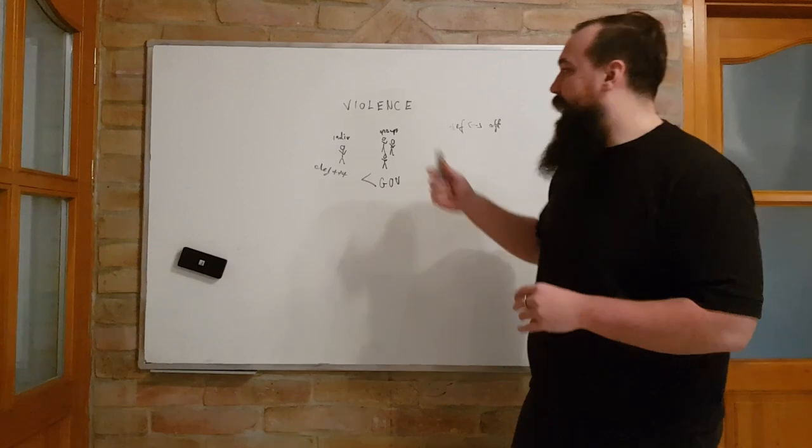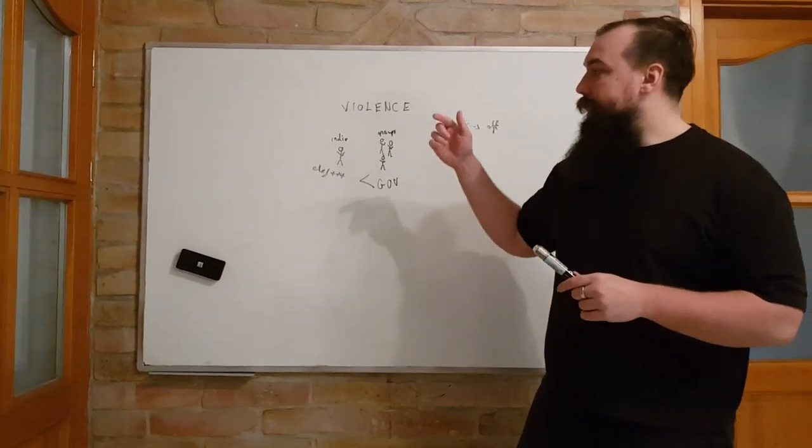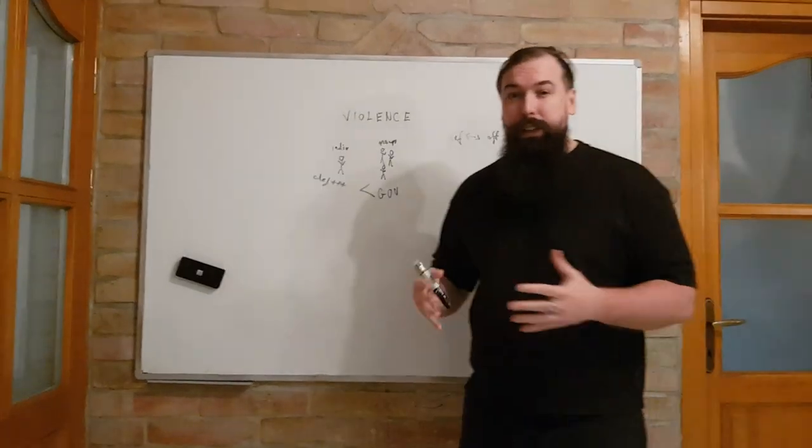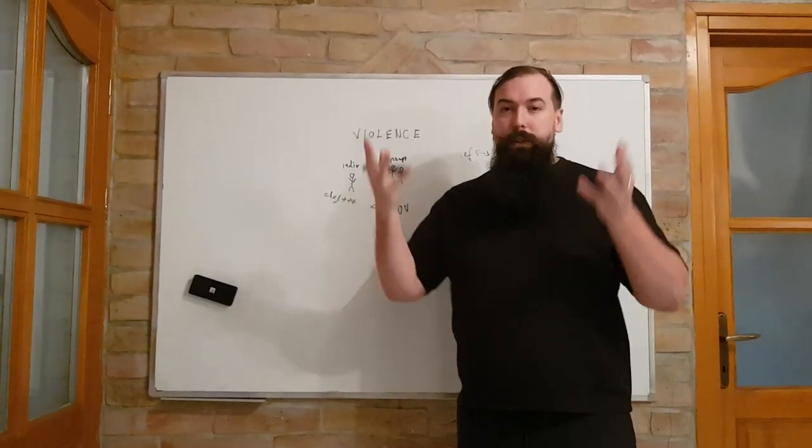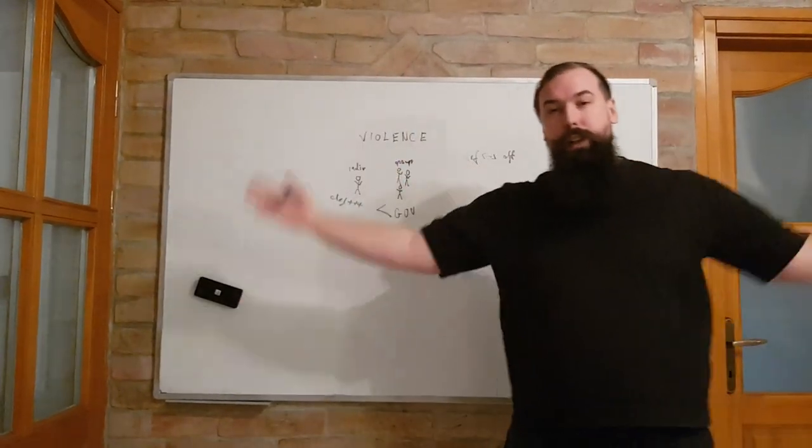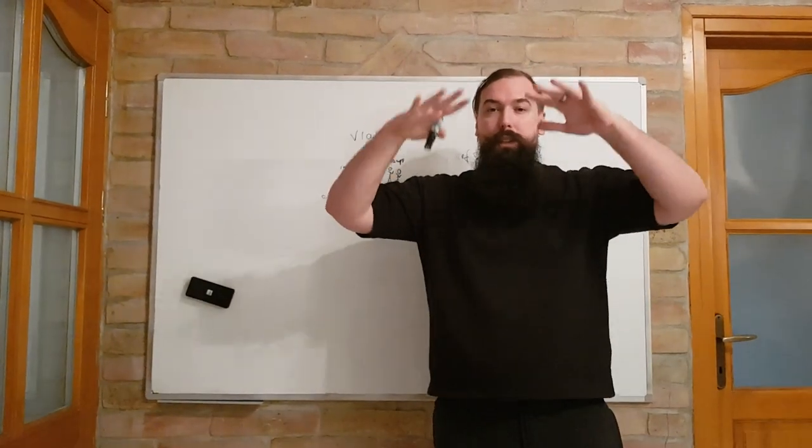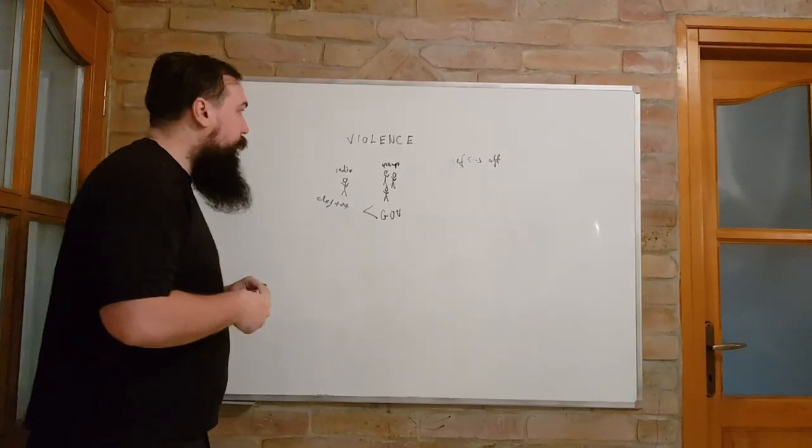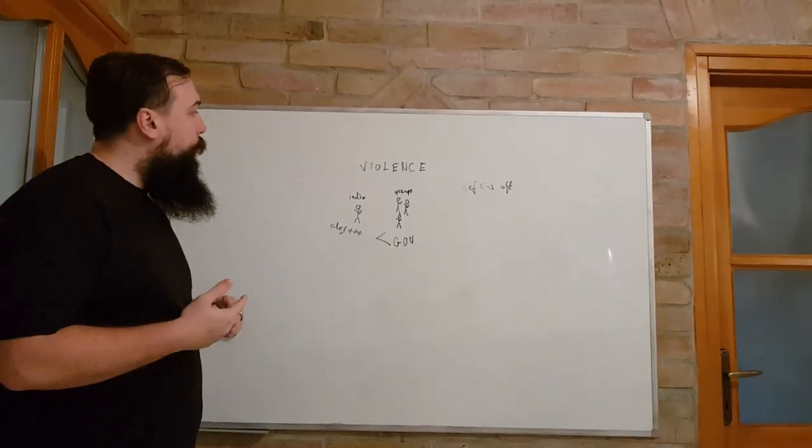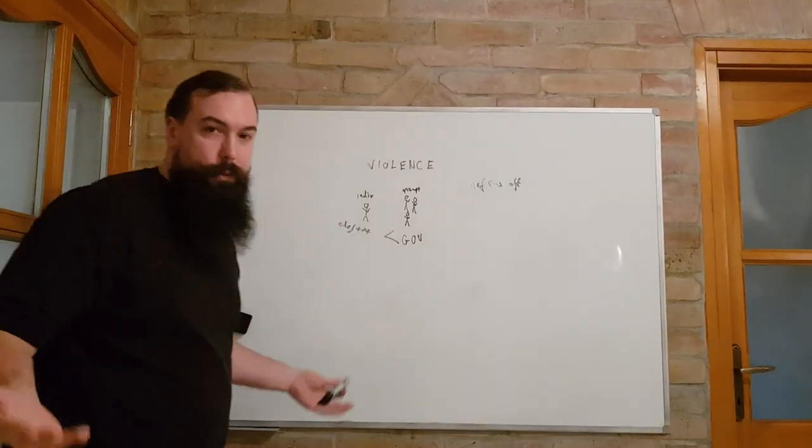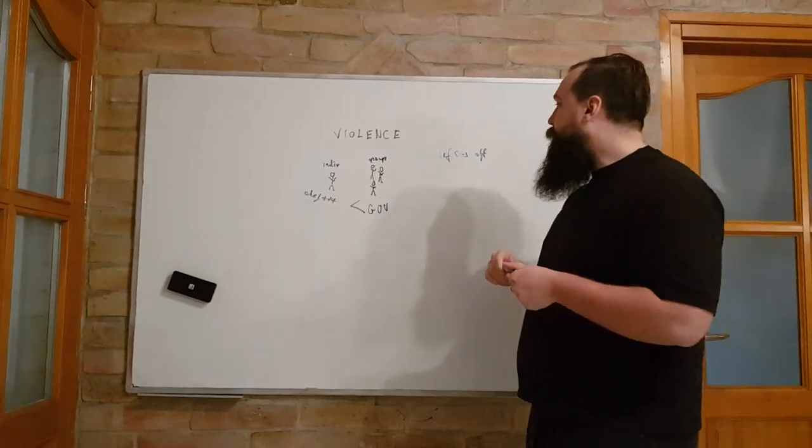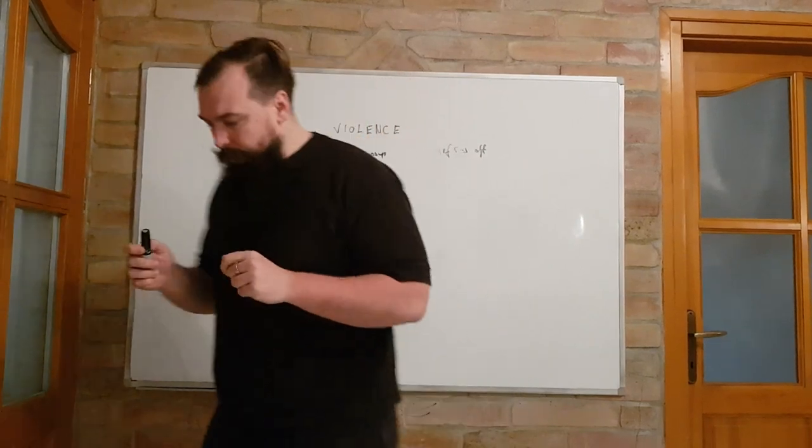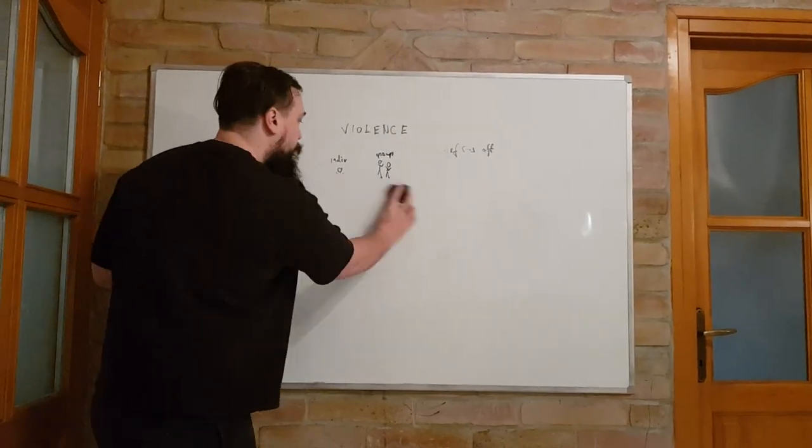Smaller organized crime is going to rise, and the largest organized crime—like governments—are going to go down in terms of power or market share of violence. This is the context for the idea I'm going to talk about.